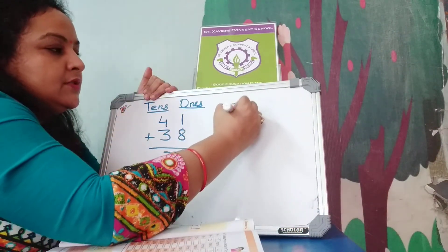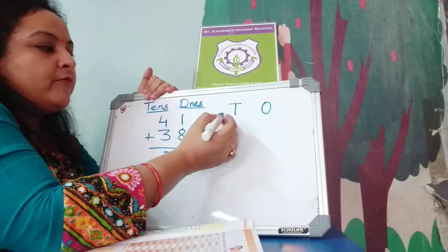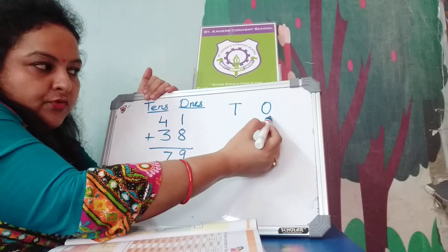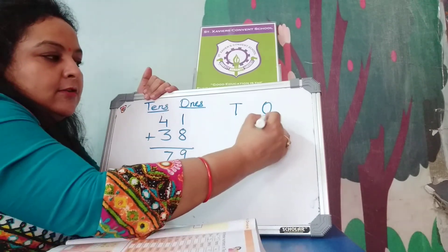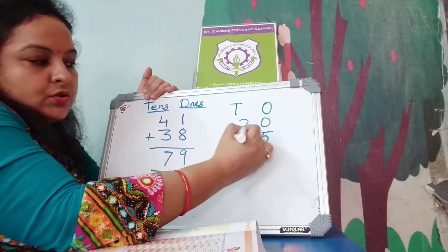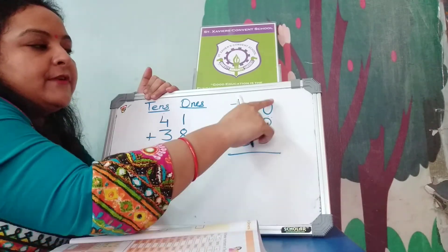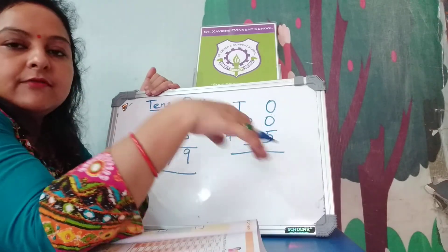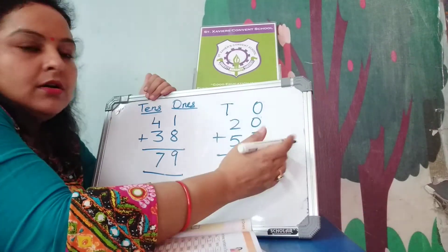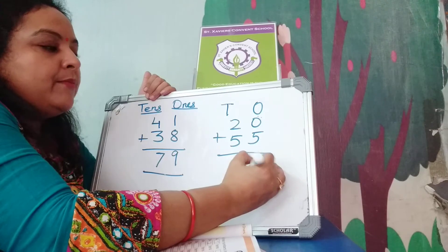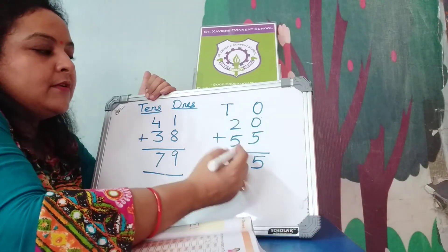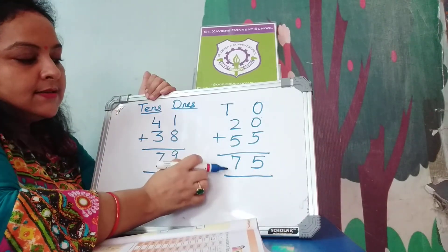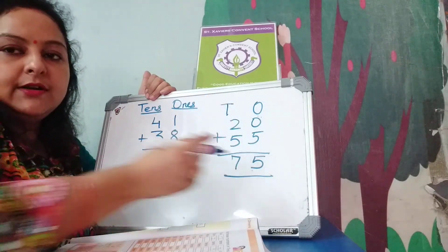Another example. T is the short form of tens and O is the short form of ones. We will add ones first: 5 plus 0 — when we add any number with 0, it makes the same number — so 5. Then 5 plus 2 is 7 for tens. So 7 tens and 5 ones makes 75.